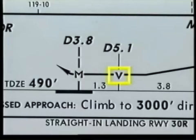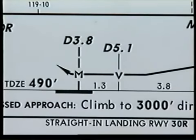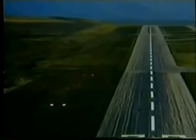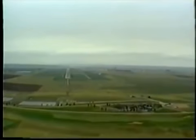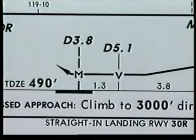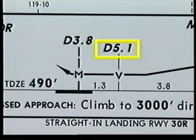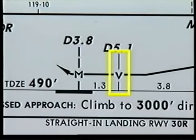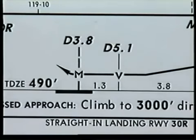The symbol V represents a visual descent point, or VDP, for a non-precision approach. It is the location where you may begin a normal descent from the MDA if you have the runway environment in sight. If VASI lights are installed at the airport, your aircraft should be on the VASI glide path at the visual descent point. This VDP is identified by the 5.1 DME fix. This point is an advisory fix, as noted by the thin vertical line. To descend, the approach threshold of that runway or approach lights or other markings identifiable with the approach end of that runway must be clearly visible.